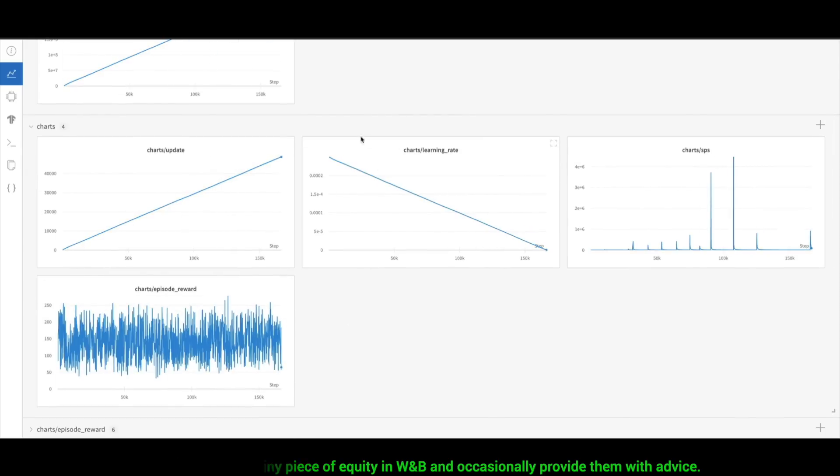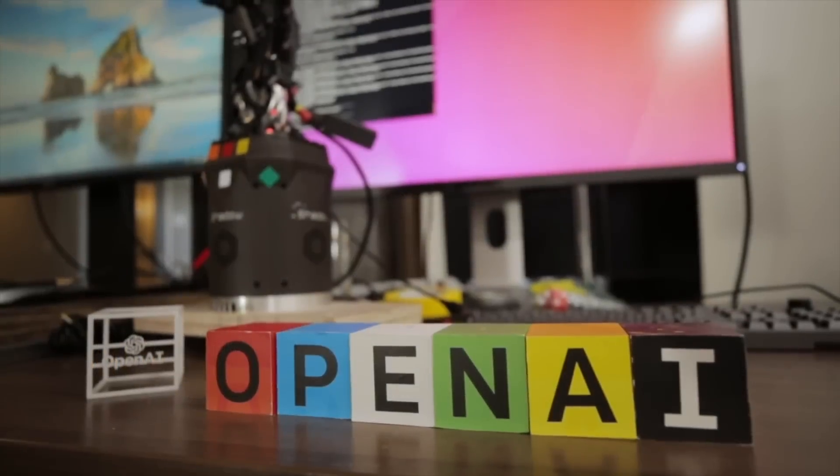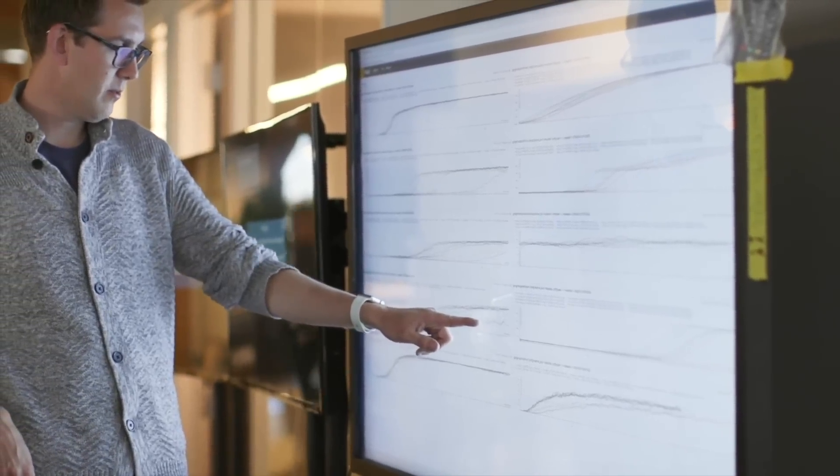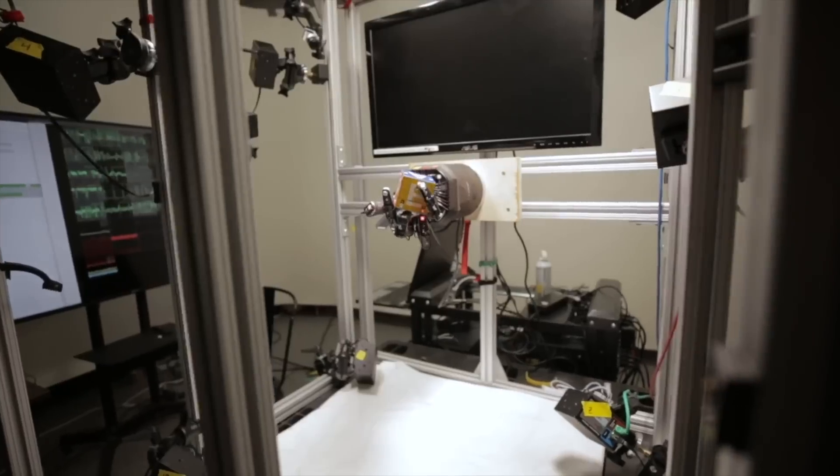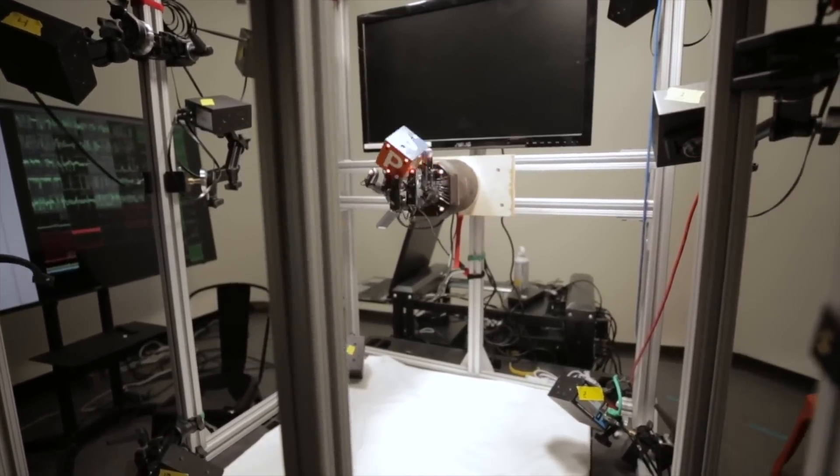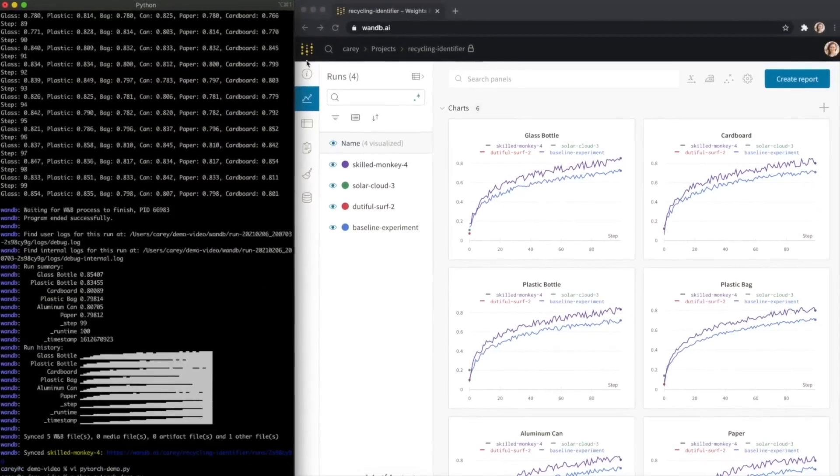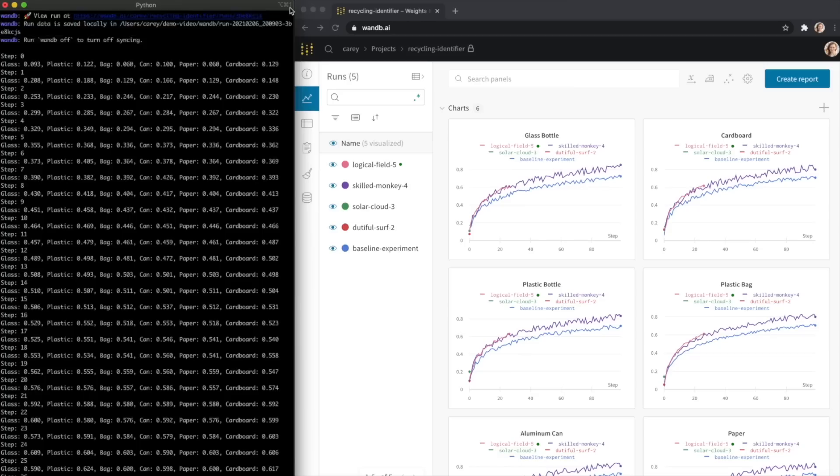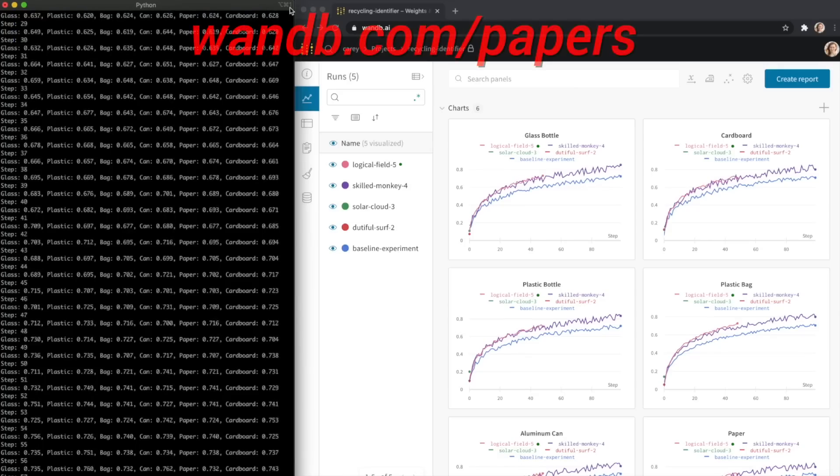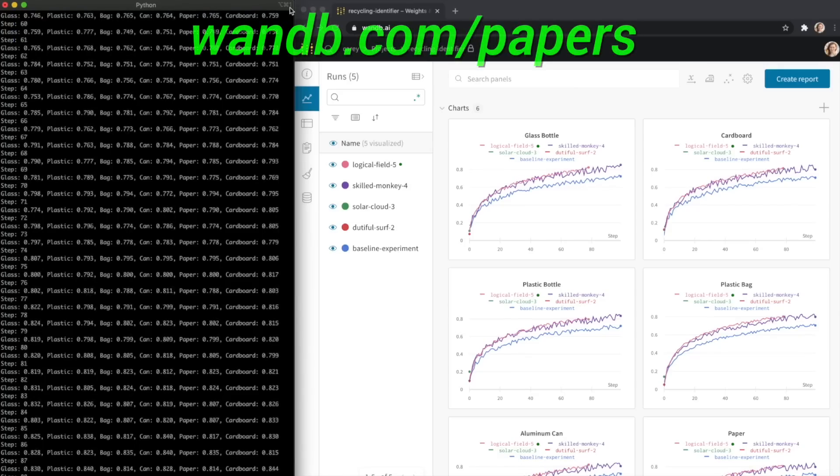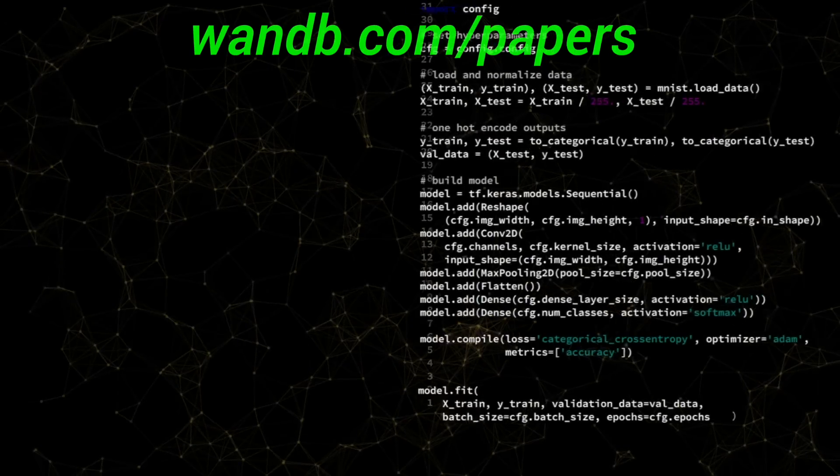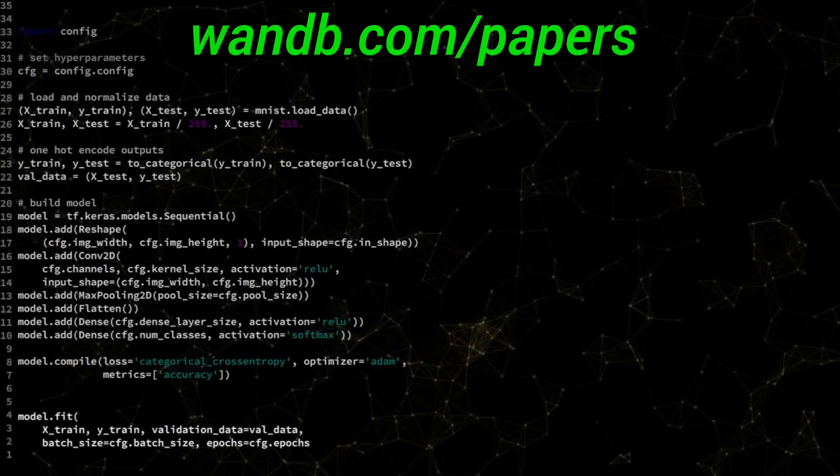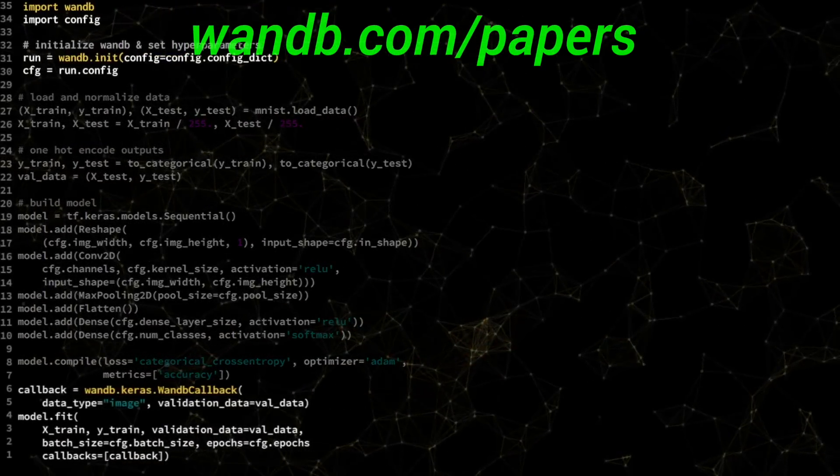It is used by many prestigious labs including OpenAI, Toyota Research, GitHub, and more. And the best part is that Weights and Biases is free for all individuals, academics, and open source projects. Make sure to visit them through wnb.com slash papers, or just click the link in the video description, and you can get a free demo today.